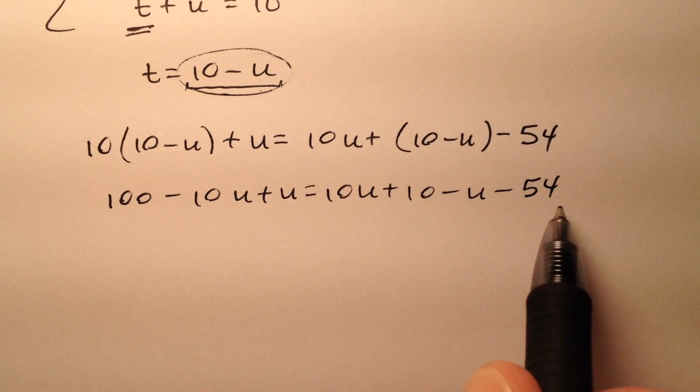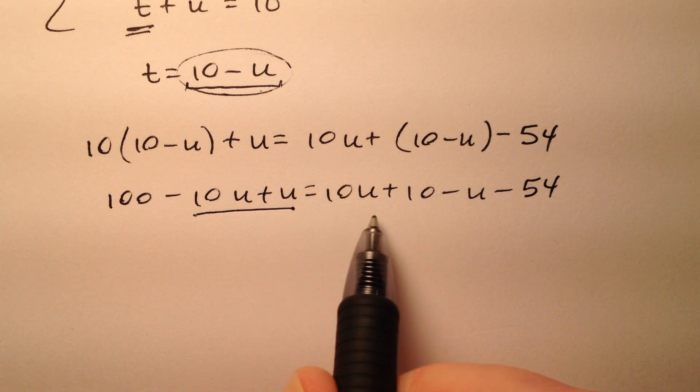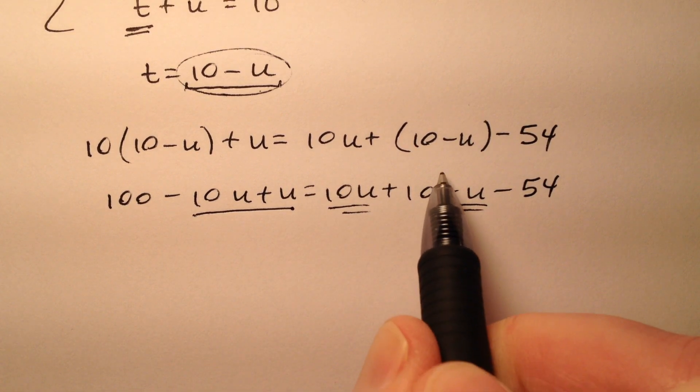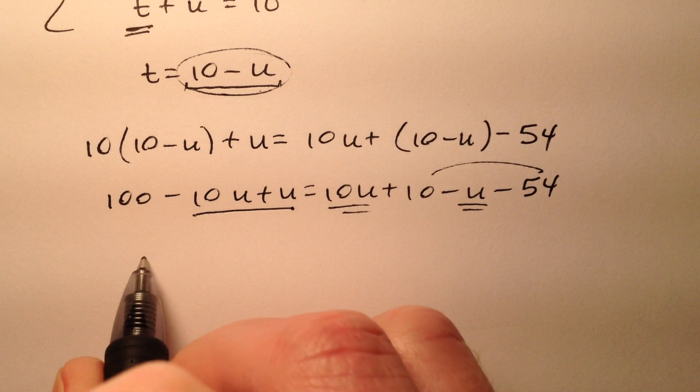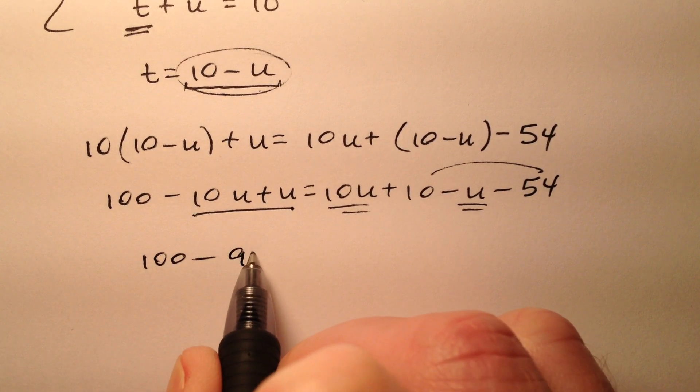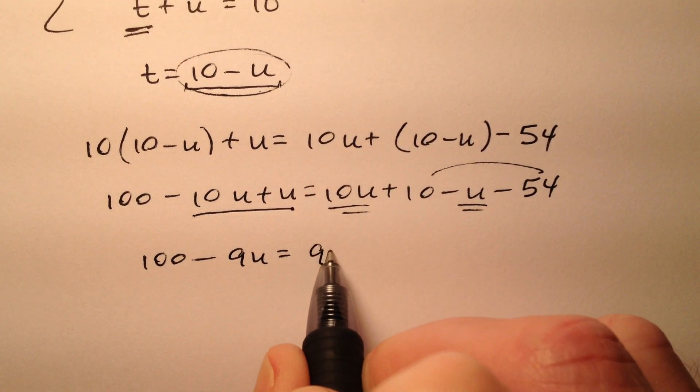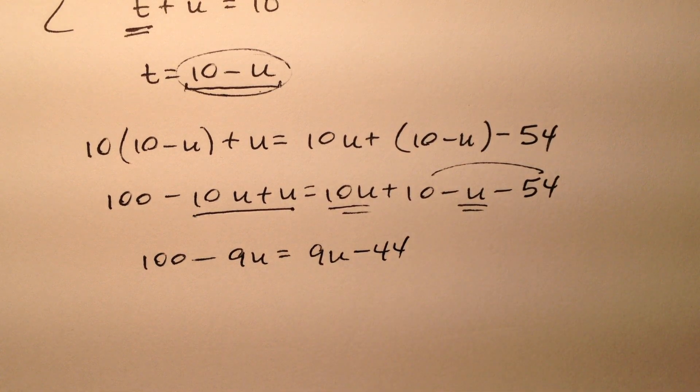Lots of terms here. There are some like terms here and here, and our constants here. So it looks like 100 minus 9U equals 9U minus 44.